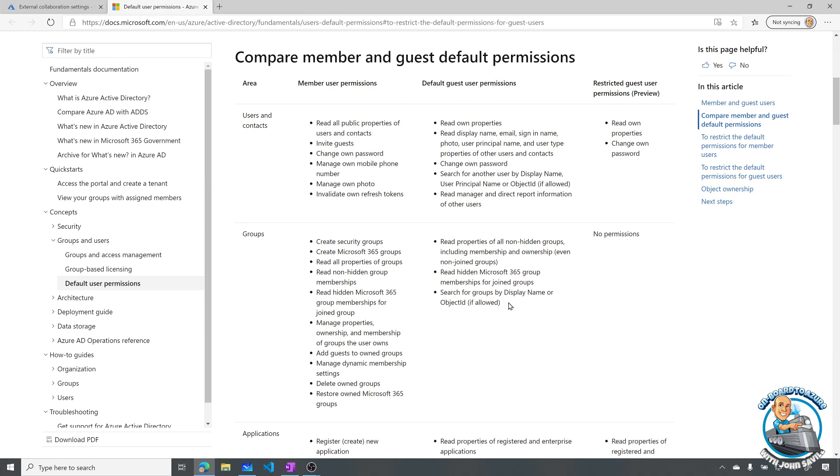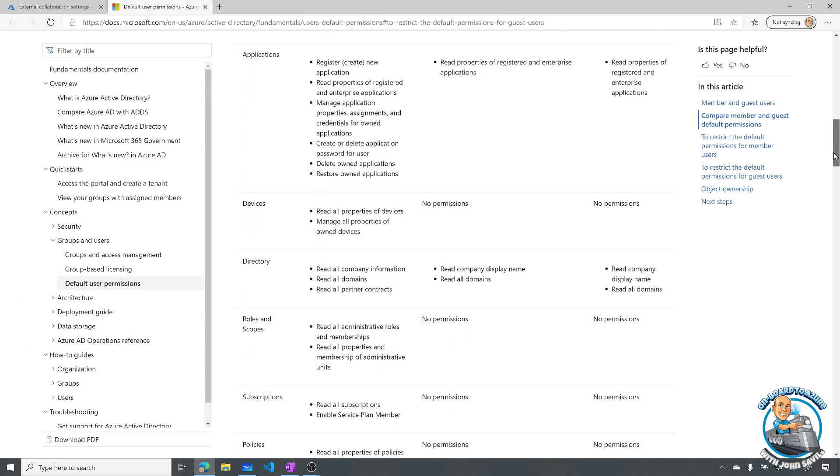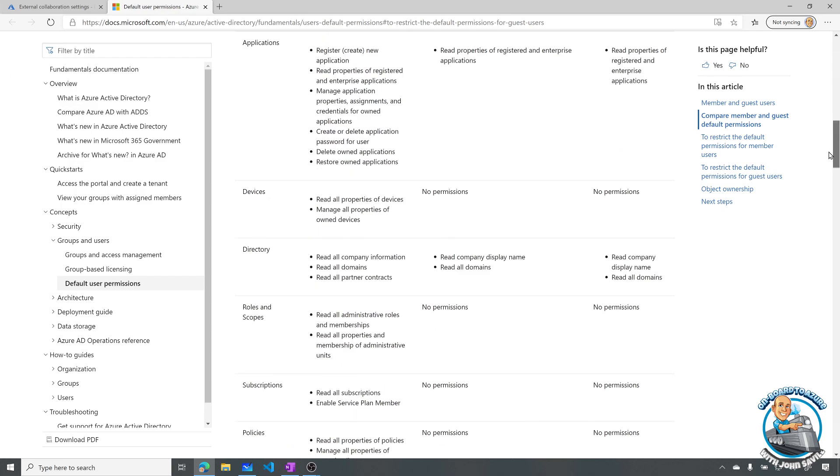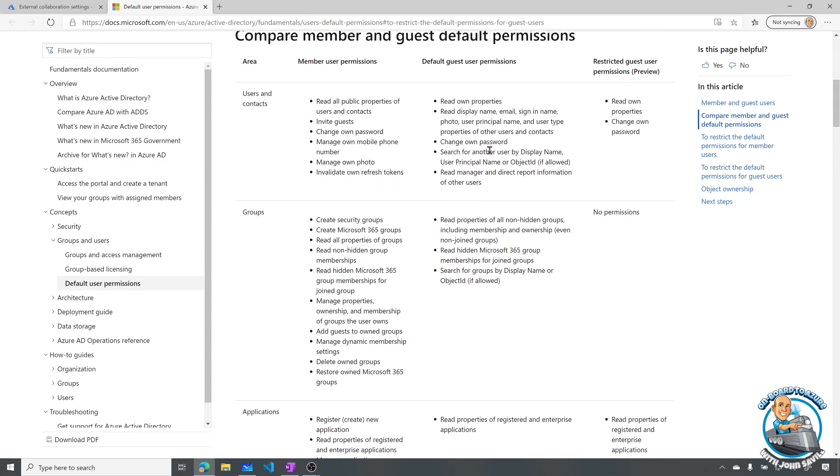To say hey. Normally I could read properties. Read display names. And contacts. And search by properties. If I do this restricted mode over here. I really can't do anything. I can read my properties. And that's it. I have no permissions to groups. I can read properties of enterprise apps. I can read company display name. But really where the big difference is are these users and contacts. And the groups. Essentially I can read my own. And that's it.